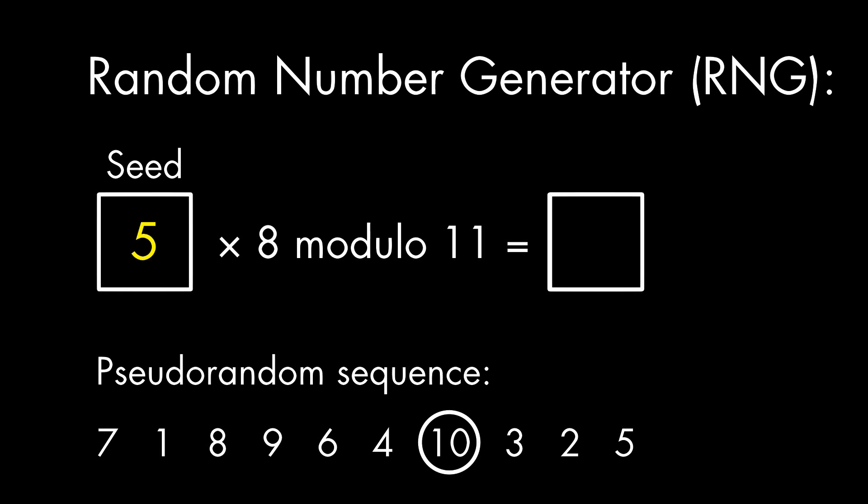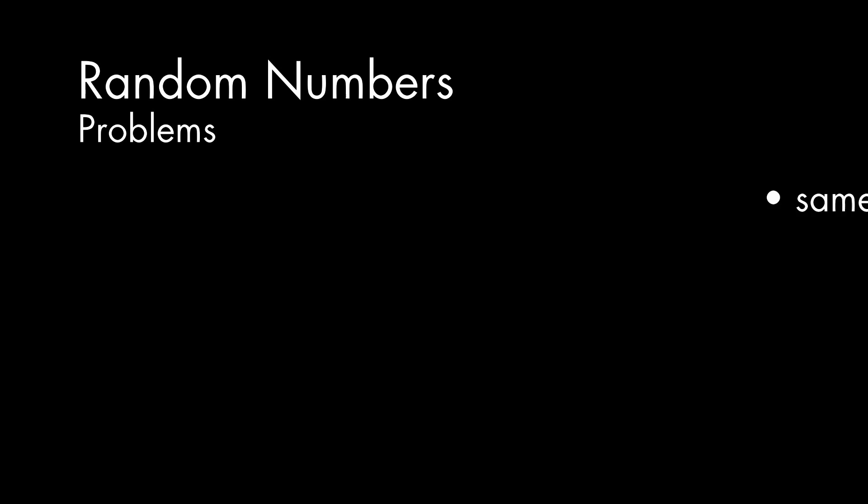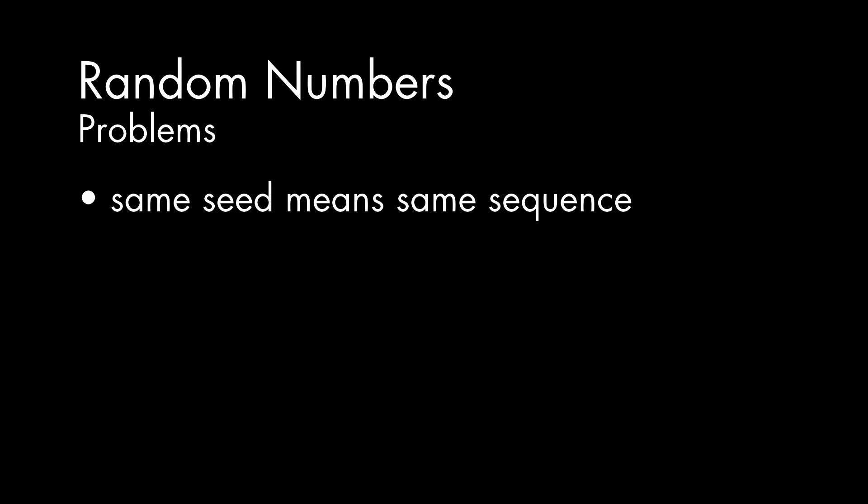This method does have a couple of problems, though. The first is how we set the initial seed, which we chose as 5. If we always use the same initial seed, we'll always get the same sequence of numbers. So if we're using random numbers to determine the events players encounter in a game, if we start with the same seed, the events are the same every time — which is not really what we want to get out of our randomness.